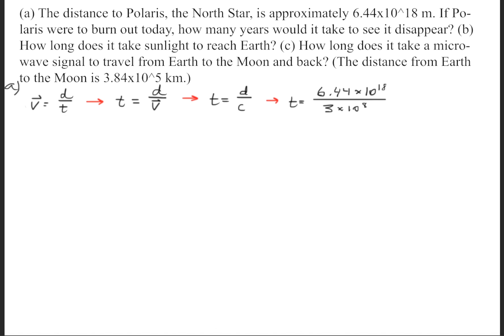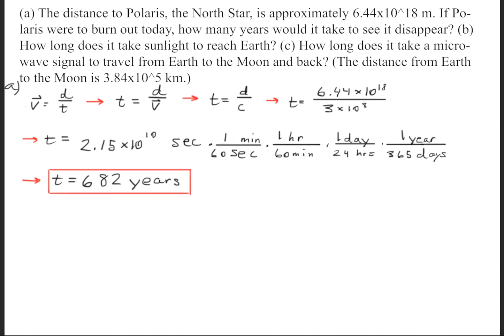So when plugging in the numbers, we'll get that the time is equal to 6.44 times 10 to the 18th meters divided by the speed of light in a vacuum, which is 3 times 10 to the 8th meters per second, and we'll get a time of 2.15 times 10 to the 10th seconds. Now, the question is asking it to be in units of years. So we'll do a little conversion factor right here and we'll find that the time it takes is 682 years.